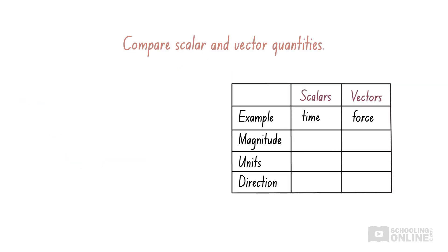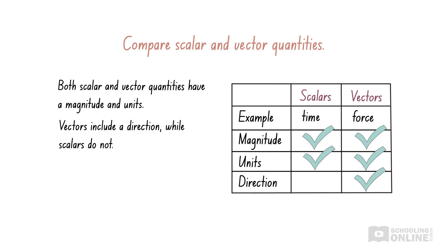Let's start with the similarities. Both scalar and vector quantities have a magnitude and units. Then we'll finish with the differences. Vectors include a direction, while scalars do not.